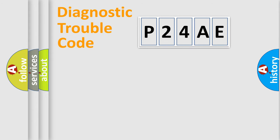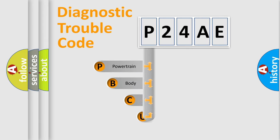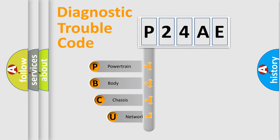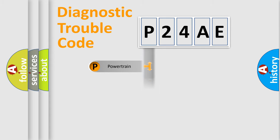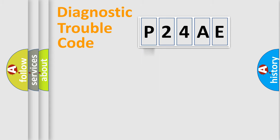Let's do this. First, let's look at the history of diagnostic fault code composition according to the OBD2 protocol, which is unified for all automakers since 2000. We divide the electrical system of the automobile into four basic units: Powertrain, Body, Chassis, and Network.